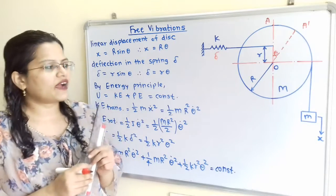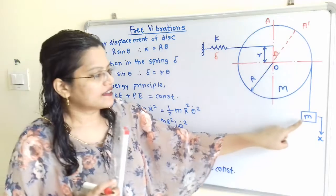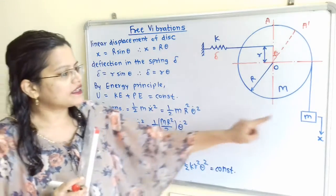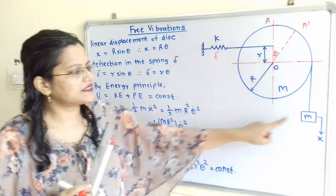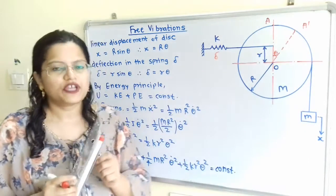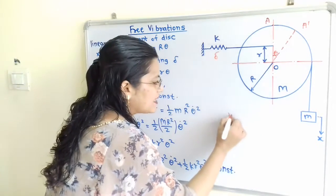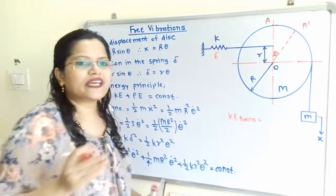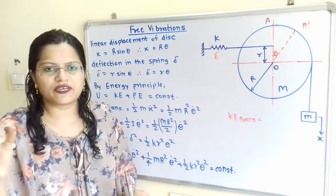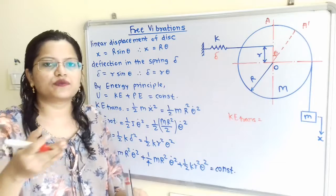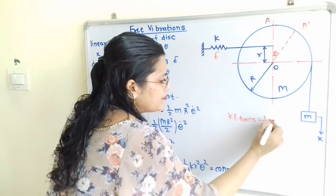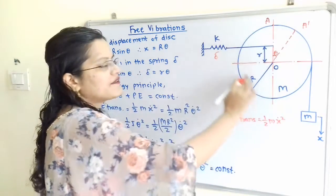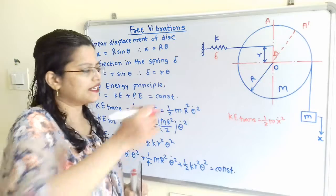There are two types of kinetic energy: translational kinetic energy and rotational kinetic energy. The linear displacement x is taking place in mass small m. So we can write the equation for KE translational. We know that kinetic energy is half mv², so writing velocity in terms of displacement gives half m·ẋ². Now for the disk, we write the rotational kinetic energy.